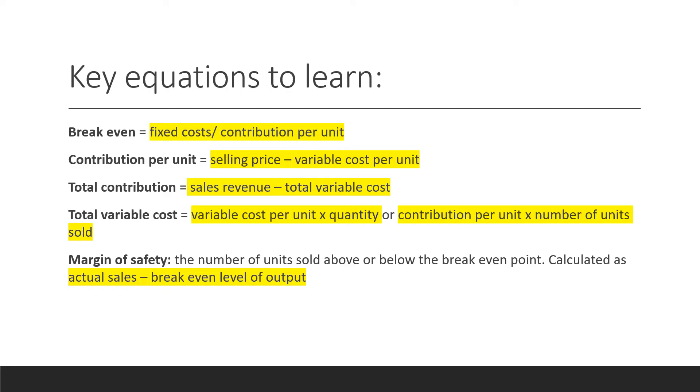Now, margin of safety. Margin of safety is the number of units sold above or below the break even point. And it's calculated as the actual sales minus the break even level of output.